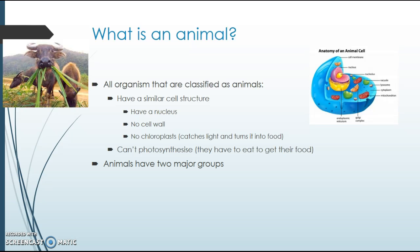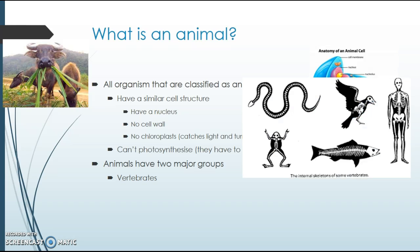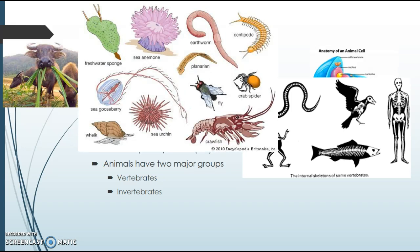Now, traditionally we've always taught that animals have two major groupings: they either are vertebrates, which means they have a backbone, or the invertebrates, which means they're all these creatures in many varied forms which don't have a backbone. Scientists have recently decided this isn't correct — vertebrate and invertebrate aren't true phyla.